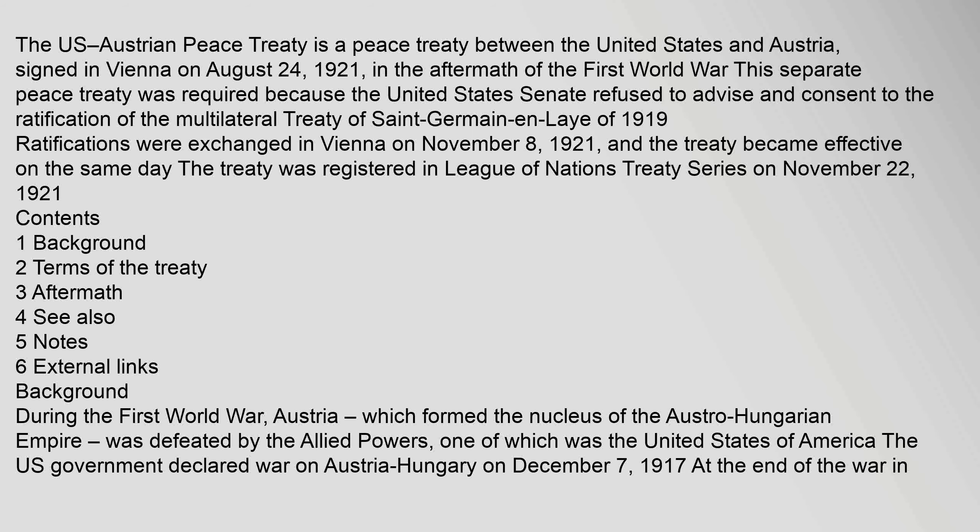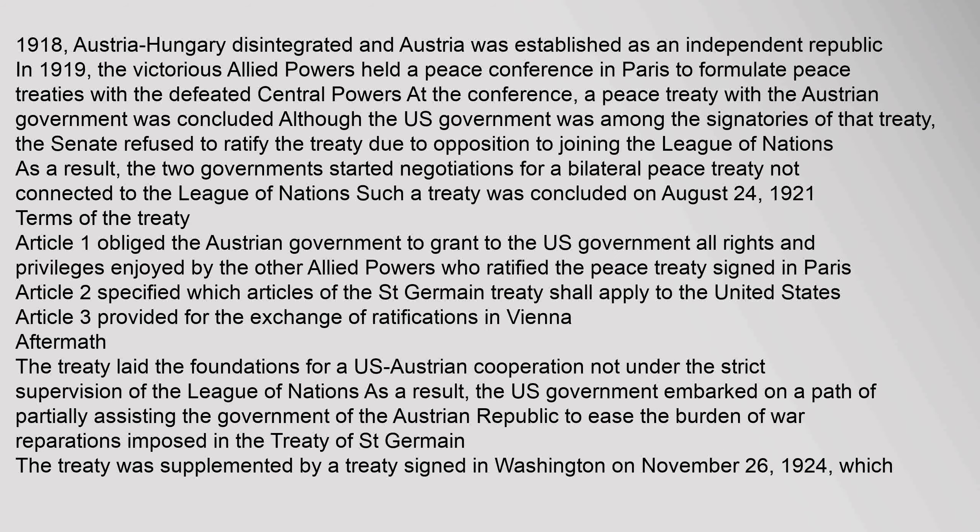During the First World War, Austria, which formed the nucleus of the Austro-Hungarian Empire, was defeated by the Allied Powers, one of which was the United States of America. The U.S. government declared war on Austria-Hungary on December 7, 1917. At the end of the war in 1918, Austria-Hungary disintegrated and Austria was established as an independent republic.